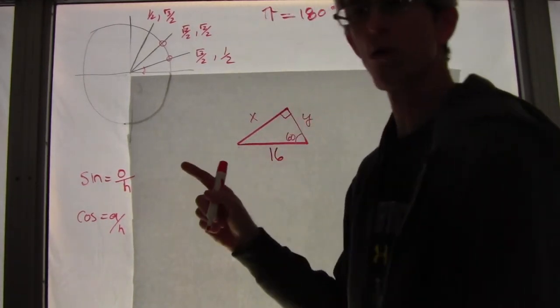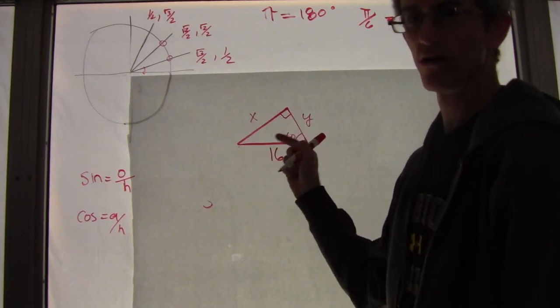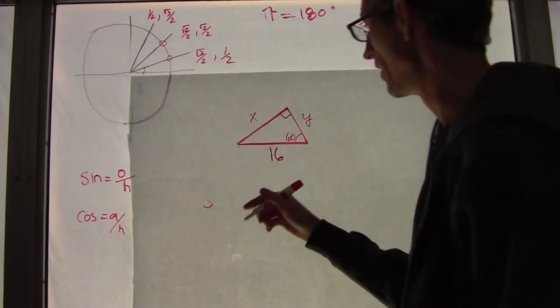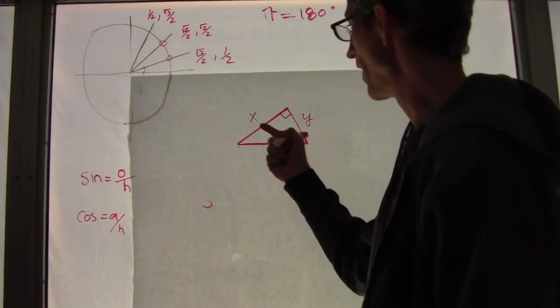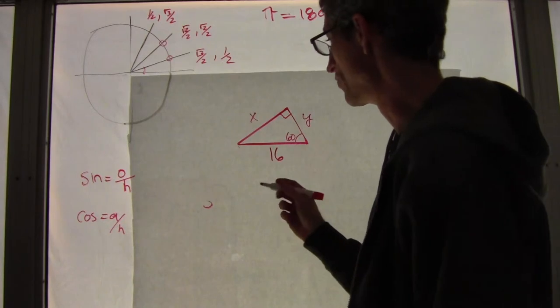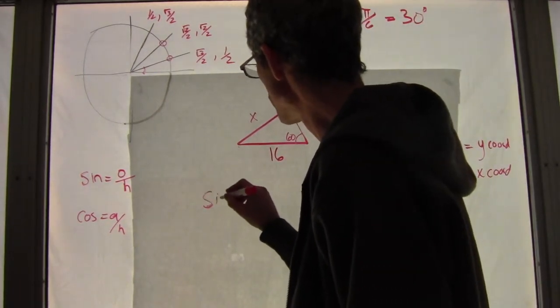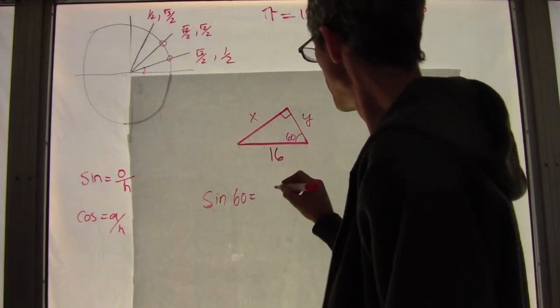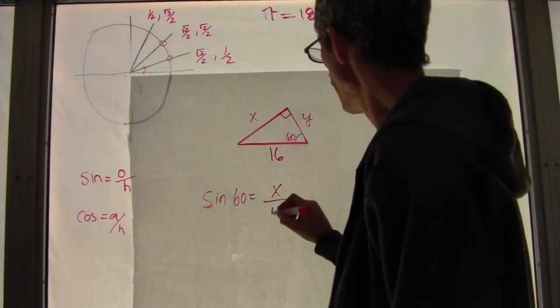That's going to give me, which is what you want to do is you don't want to have two variables. You want to have one variable and then one number. So you have to figure out whether you use sine or cosine. Like if you use tangent, that would be opposite over adjacent. It would be x over y, and you wouldn't really be able to do much because it's two. You only want one variable.